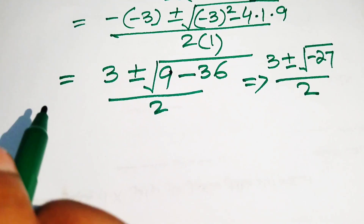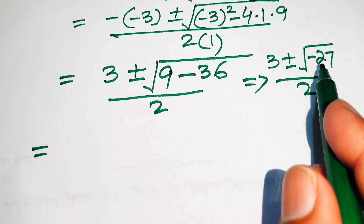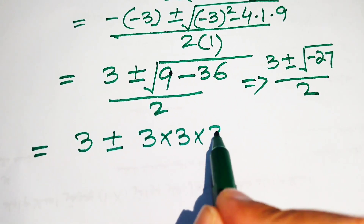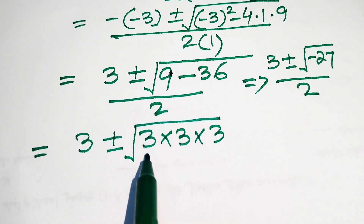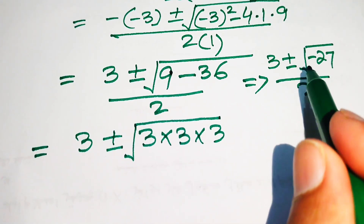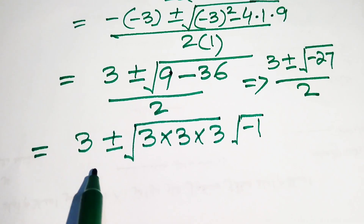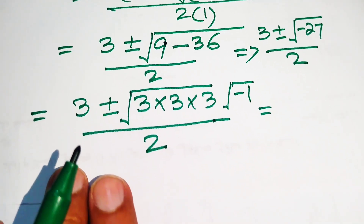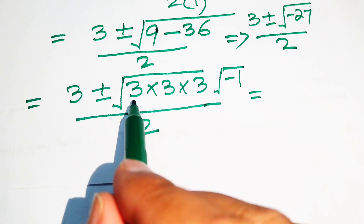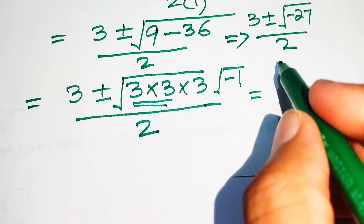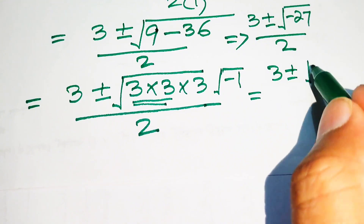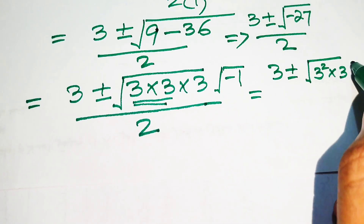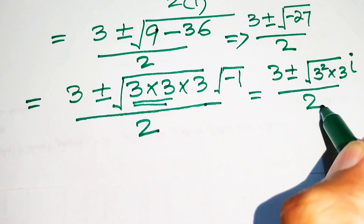We factor 27 as 3 times 3 times 3, and separate the square root of minus 1 as iota (i). So we have (3 plus or minus square root of 3 squared times 3 times i) divided by 2. Using the property that the square root of a product equals the product of square roots, we separate the terms.